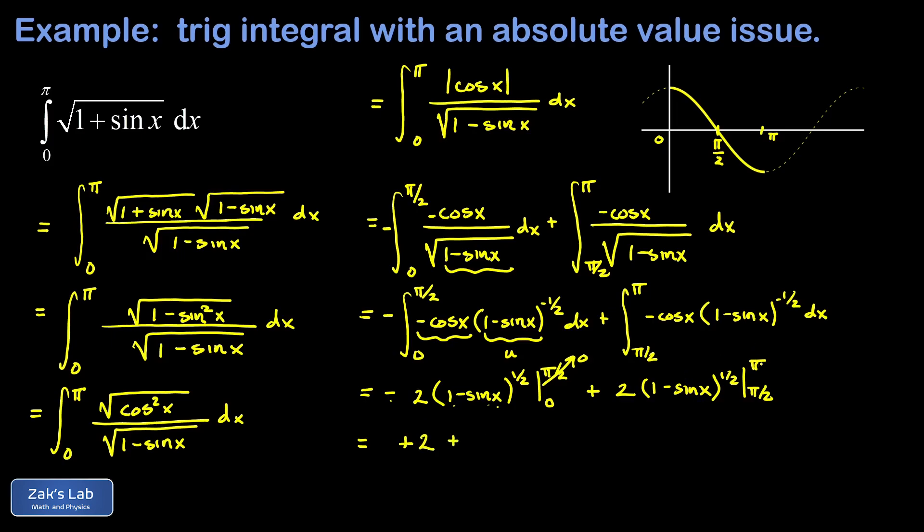In my second term if I sub in pi for x the sine of pi is 0 and I end up with a positive 2 for that upper limit, then I subtract what I get when I sub in the lower limit which is that same thing pi over 2.